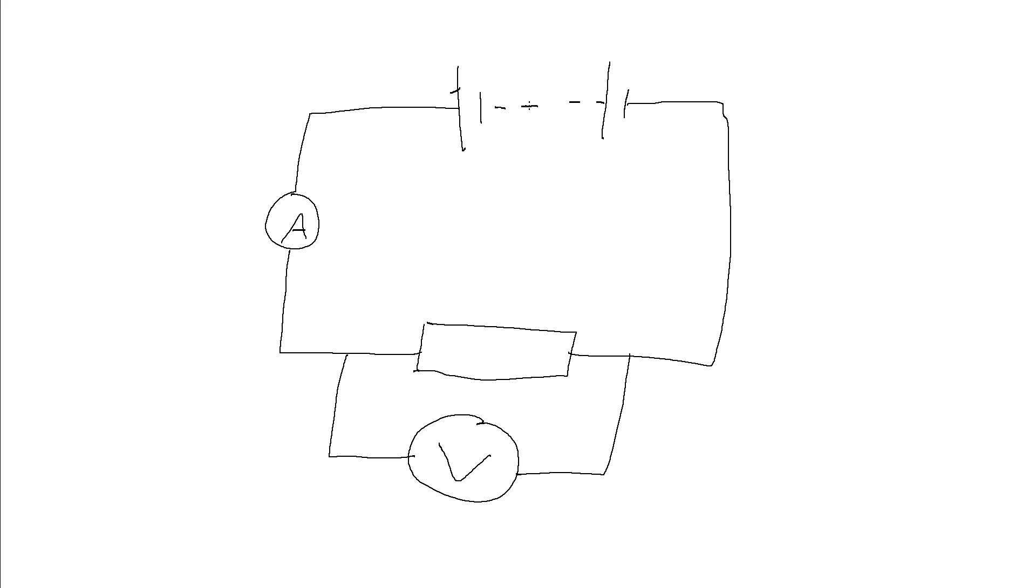So here as we vary the power supply we can see what happens to the current passing through this component and to the voltage across it. And the other components that we might be looking at are a filament lamp which looks like this - a circle with a cross through it compared to a rectangle for a resistor. The symbol for a diode looks something like this. Sometimes this will have a circle around it and if it's light emitting then we have something like this coming off of it.